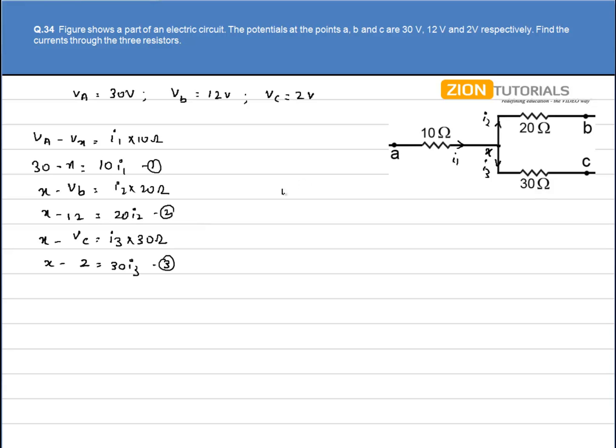Now, we know that I1 equals I2 plus I3. Using these three equations and this fourth equation, we can get the values of I1, I2, and I3.